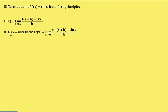So if function x equals sine x, then f dash x is equal to the limit as h goes towards zero of sine x plus h minus sine x on h. Now we're going to use a very important theorem that we learnt earlier to simplify that numerator.